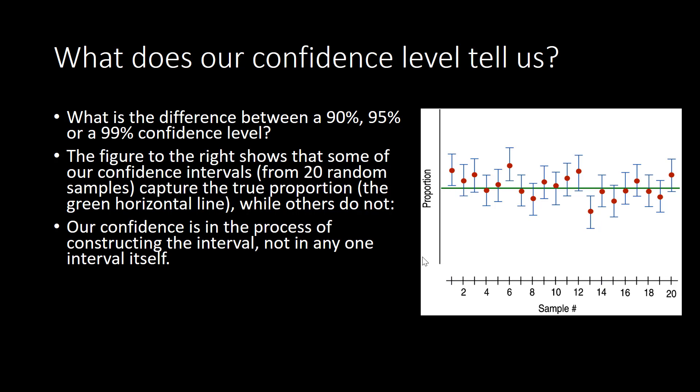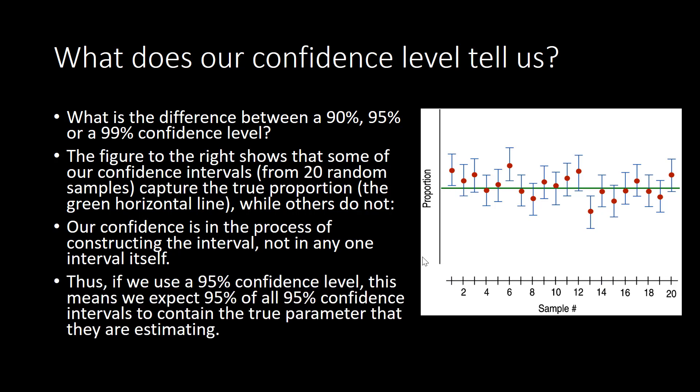So our confidence is in the process of constructing the interval, not in any single interval. Therefore, if we use a 95% confidence level, this means we expect 95% of the confidence intervals to contain the true parameter that they are estimating.